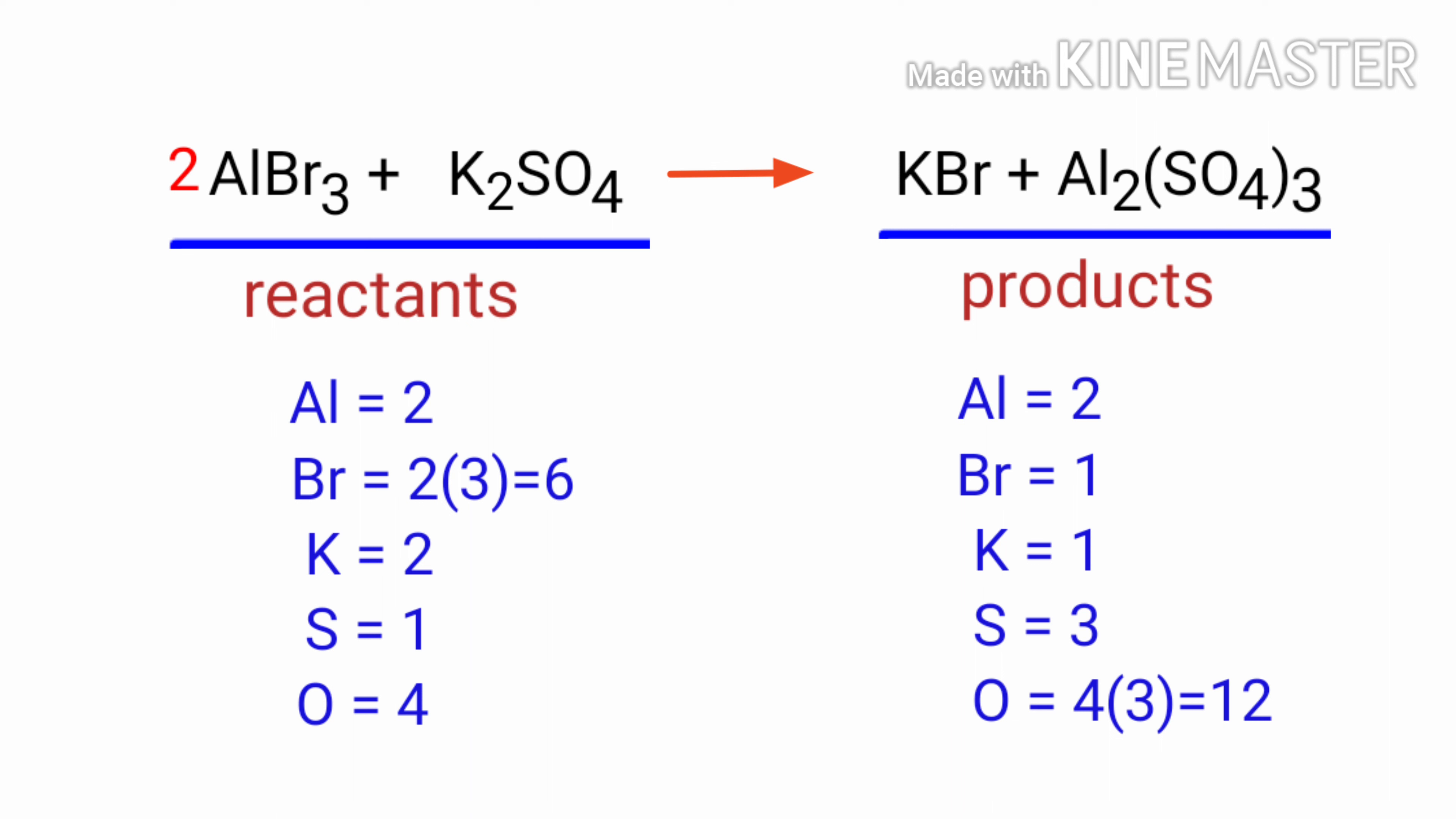Now we need to balance the sulfur atoms. To do this, we need to put a coefficient of 3 in front of K2SO4. The sulfur and oxygen atoms are balanced.